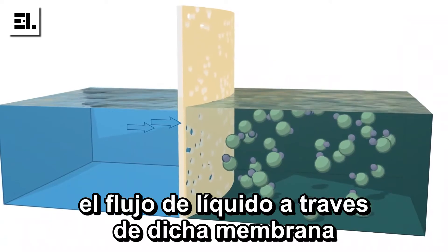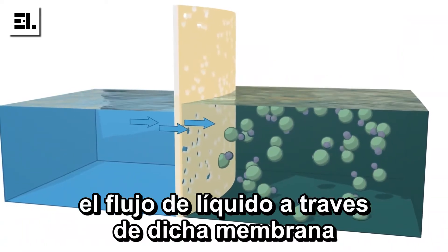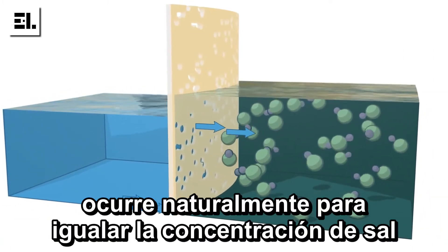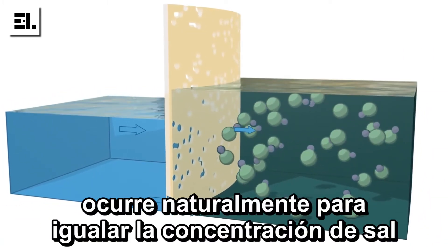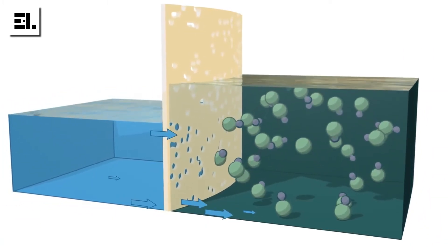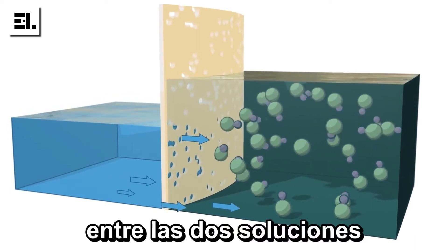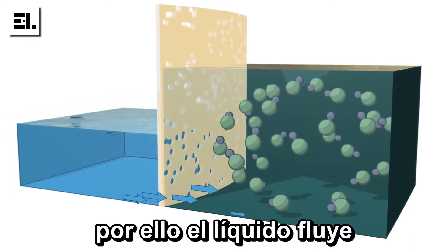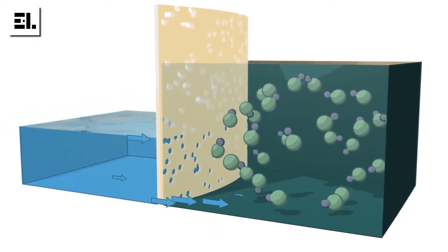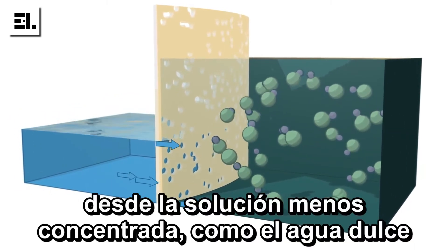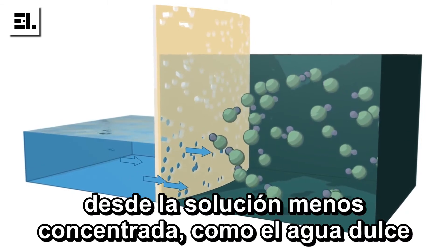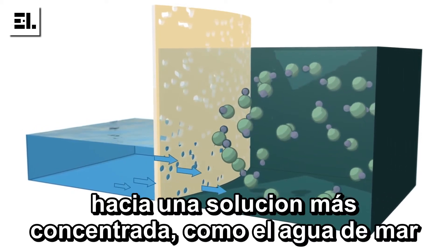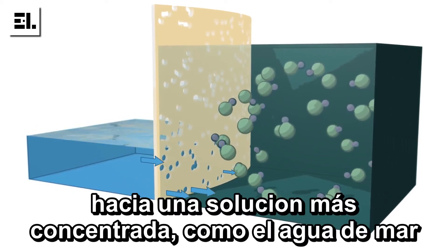The flow of liquid through such a membrane occurs naturally to try and even out the salt concentrations between the two solutions. That is, the liquid flows from the less concentrated solution, such as fresh water, to a more concentrated solution, such as seawater.